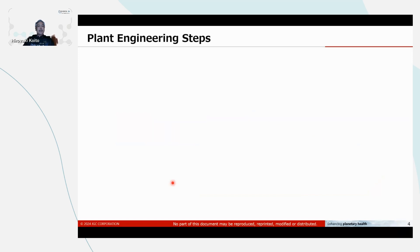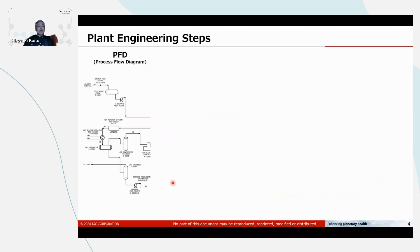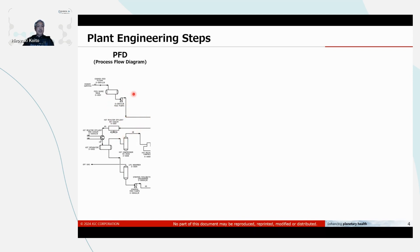For the engineering, we start from PFD — that is process flow diagram. This is a conceptual diagram, and it shows equipment, such as pressure vessels, pumps, heat exchangers, and so on — and these lines are piping.